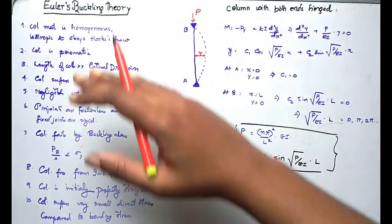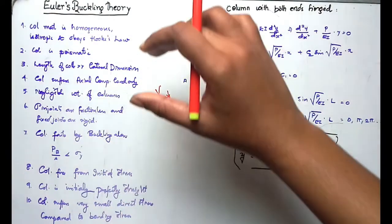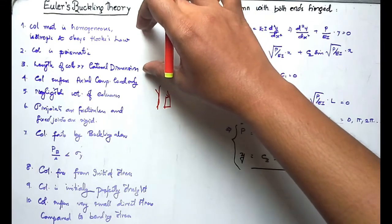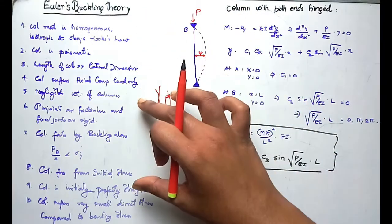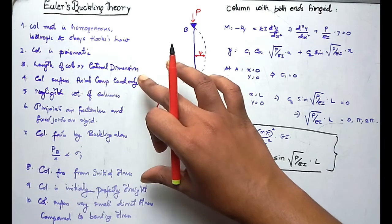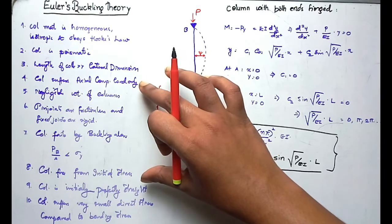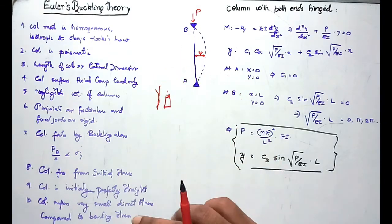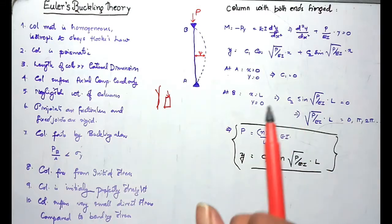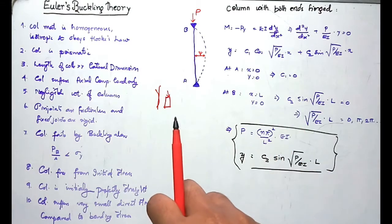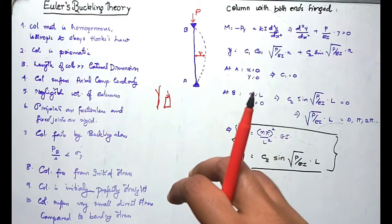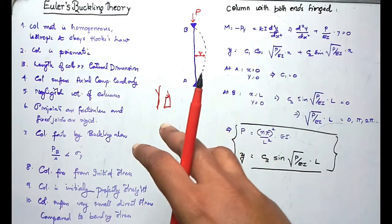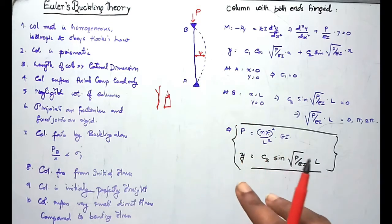So these are the 10 assumptions, in which the first few correspond to the column material or the column dimensions. The next few correspond to the column loading and its initial condition. The final one corresponds to the stress — the maximum stress should be given by bending only, not by direct stress.